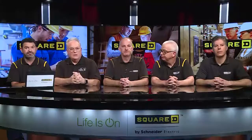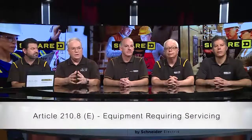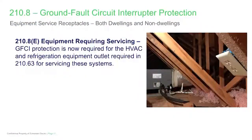When we move on to 210.8(E), it deals with equipment requiring servicing. This is your 210.63 application where the receptacle has to be provided for servicing HVAC equipment. The same change happened here that happened in residential — it really applies both indoor and outdoor. The GFCI requirement is certainly necessary in these locations for these types of operations to protect workers performing servicing of that type of equipment.